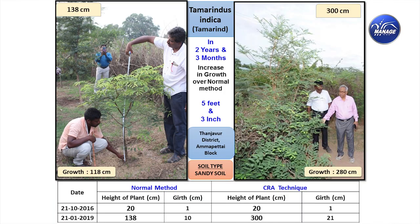Now for the proof — we took biometric data. Tamarind is one of the very slow-growing species. This trial was done in Thanjavur district. Plantation was on 21/10/2016; both plants started at 20 cm. When measured in January 2019, the normal method grew to 138 cm, whereas the CRA method reached 300 cm. Girth went from 1 to 10 in the normal method, but from 1 to 21 in the CRA technique.